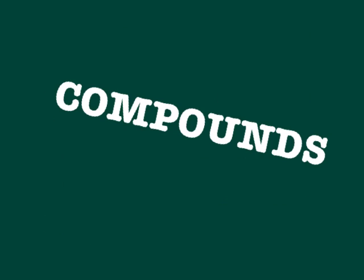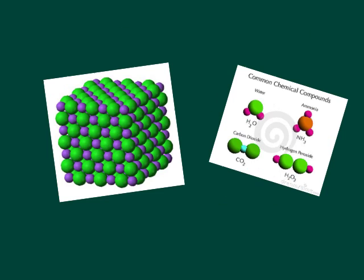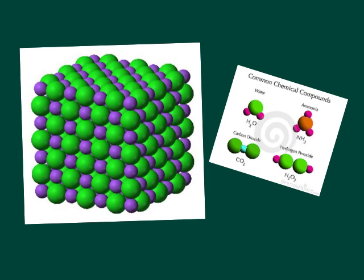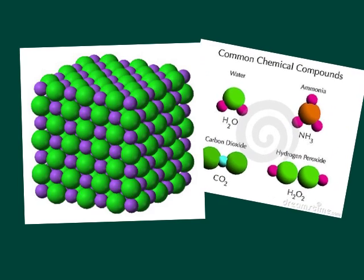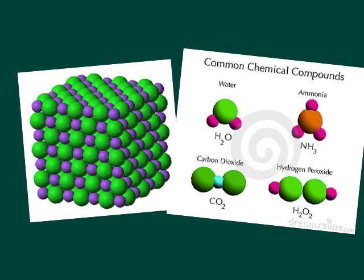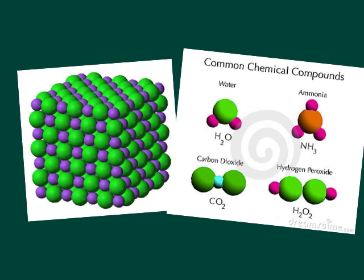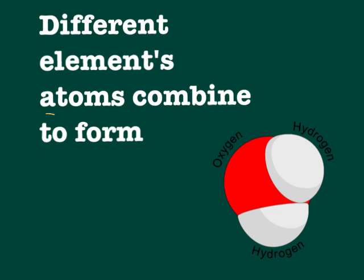Now we're going to take a look at what compounds are. Both of these pictures represent chemical compounds. If you notice, each of the little balls is represented by a different color. That's important because with compounds, unlike molecules, the atoms need to be different. Different elements and atoms combine to form compounds.